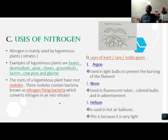Next we have the uses of Nitrogen. Nitrogen is mainly used by leguminous plants to fix nitrates in the soil. Examples of leguminous plants are beans, desmodium, peas, cloves, groundnuts, lucerne, cowpeas, and garlic.